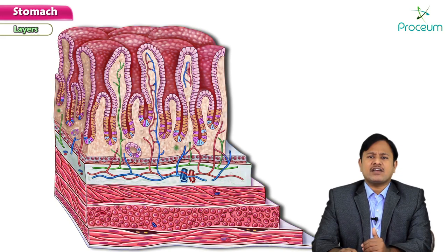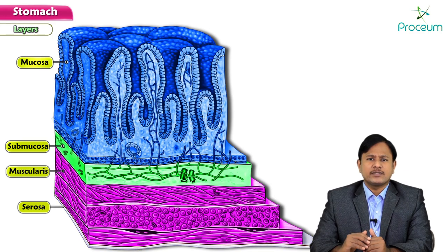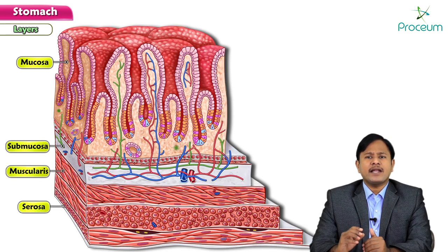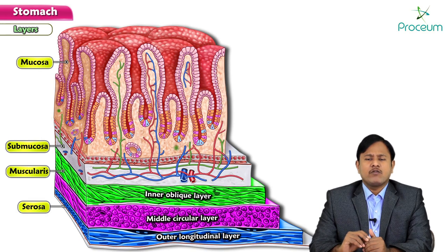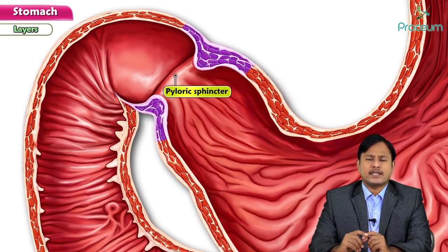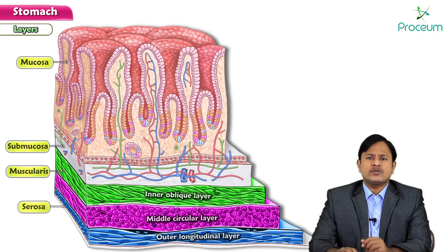The layers of the stomach are mucosa, submucosa, muscularis, and serosa. The mucosa consists of the epithelium, lamina propria, and muscularis mucosa. An important feature is that the stomach has three layers of muscle. While the entire GIT generally has outer longitudinal and inner circular muscles, the stomach has an extra middle circular layer, which is thickened at the pyloric sphincter — forming the pyloric sphincter itself.